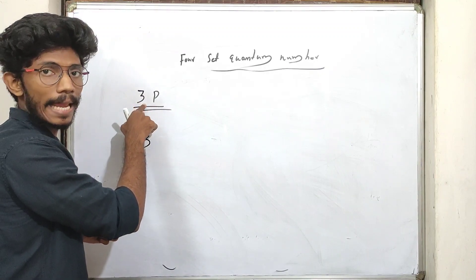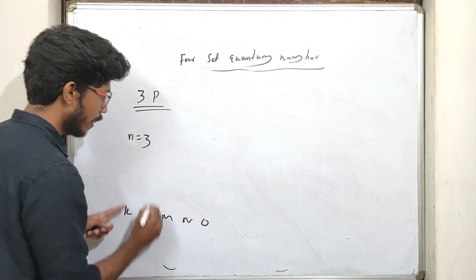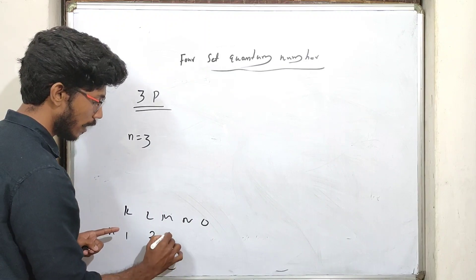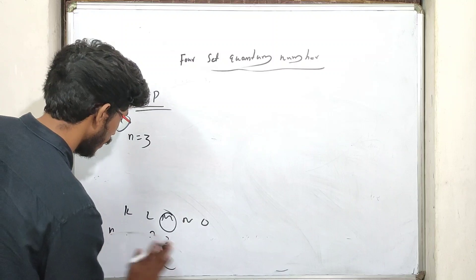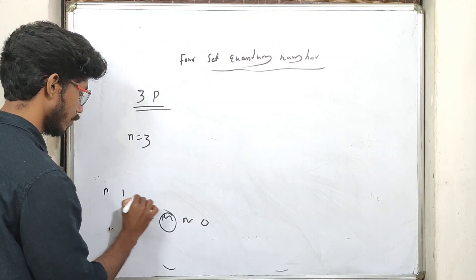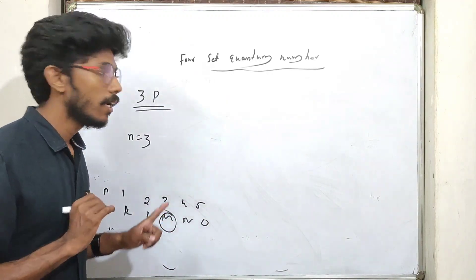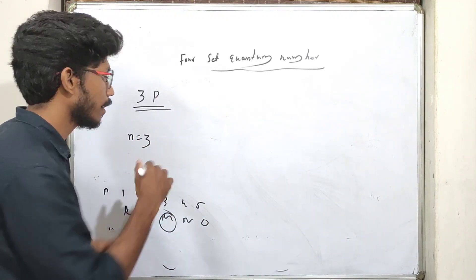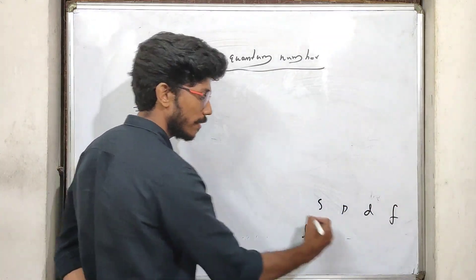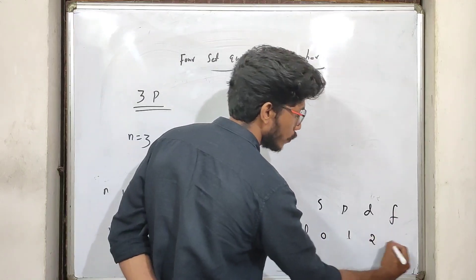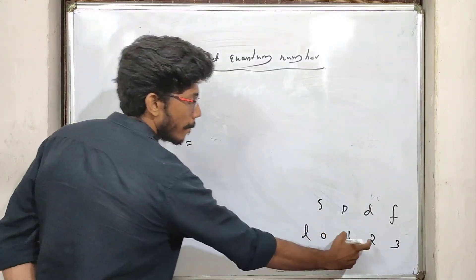The n value is 3. For the 3p sub-shell, the L value — since for S sub-shell L is 0 and for P sub-shell L is 1 — the P orbit has n equal to 3 and L equal to 1.